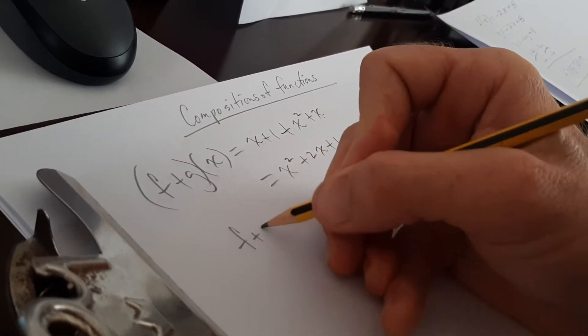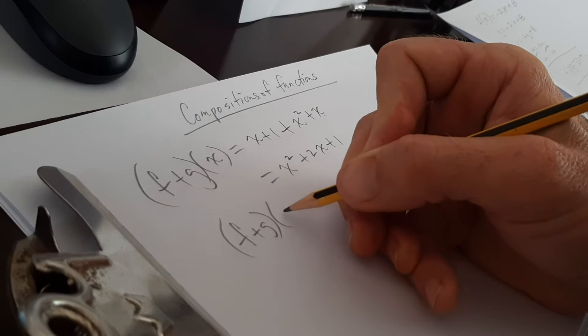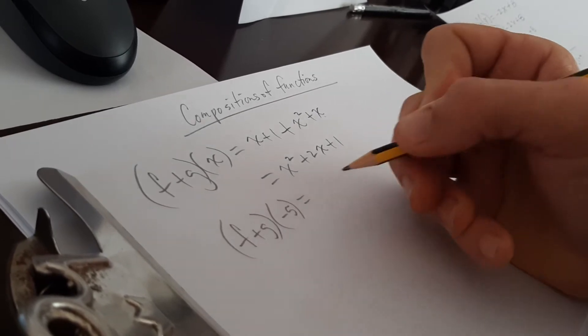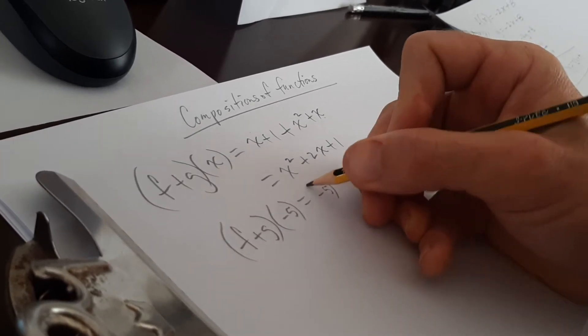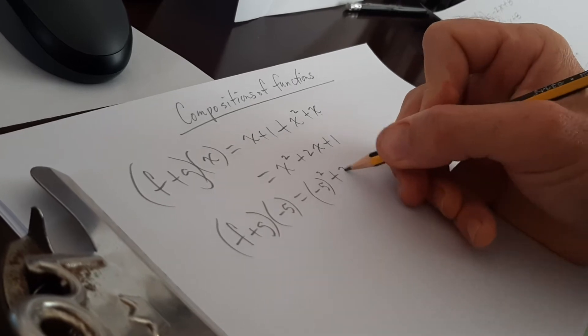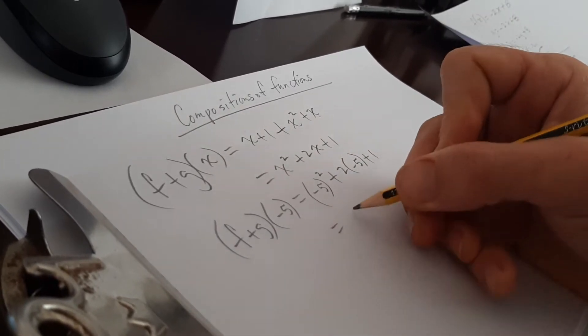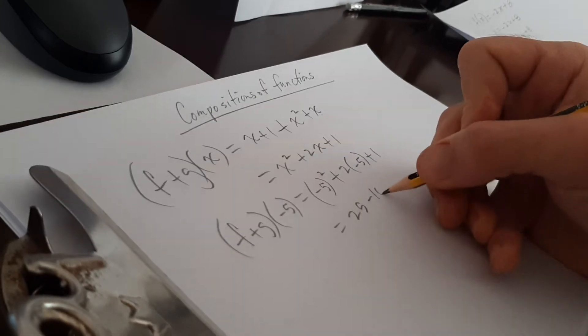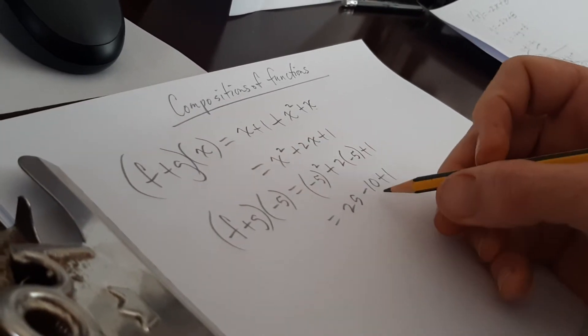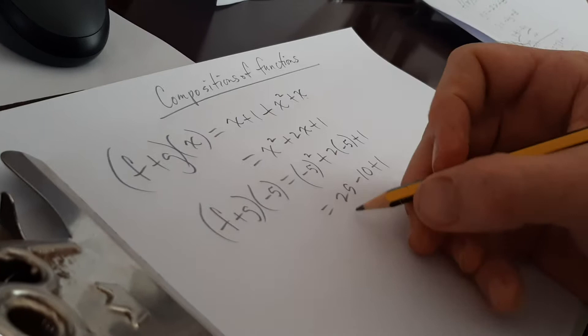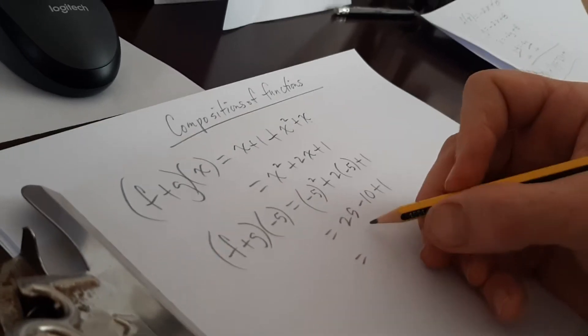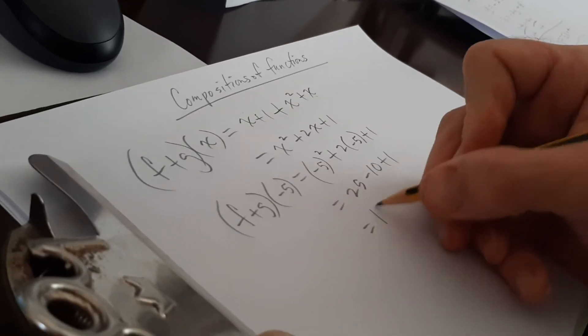Now I want to find out what is f plus g of minus 5 in this one, and I substitute it in. Minus 5 squared plus 2 times minus 5 plus 1. So I got 25 minus 10 plus 1. You can stick in your calculator for 1. That's going to be minus 9, right? 25 minus 9, 16.